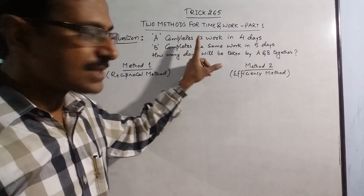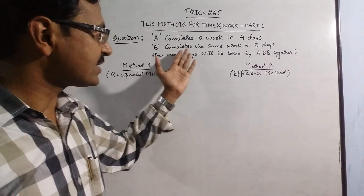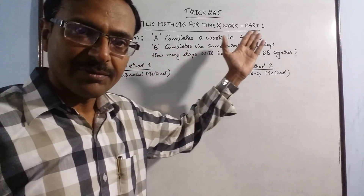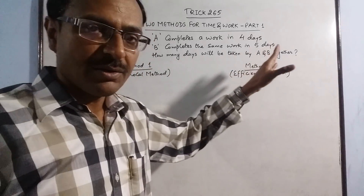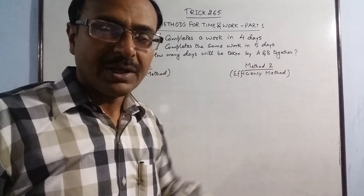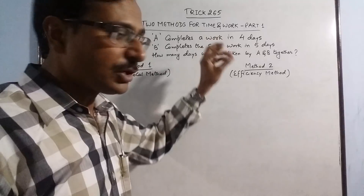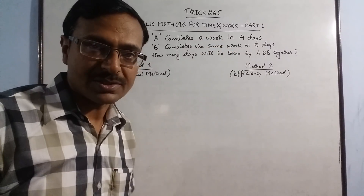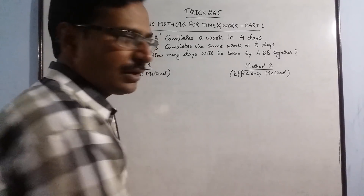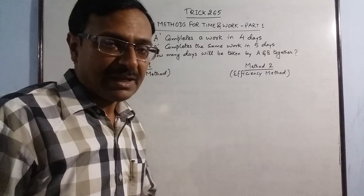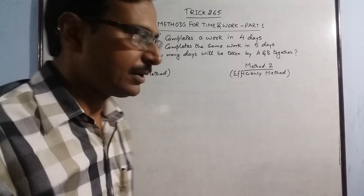Person A works alone to complete a work in four days. Person B works alone to complete the same work in five days. Now they work together — we need to find out in how many days will they complete the work. My aim here is not just to solve this question but to tell you the two methods used to solve these questions. If you gain efficiency in these two concepts, you will very easily be able to solve complex problems relating to time and work.